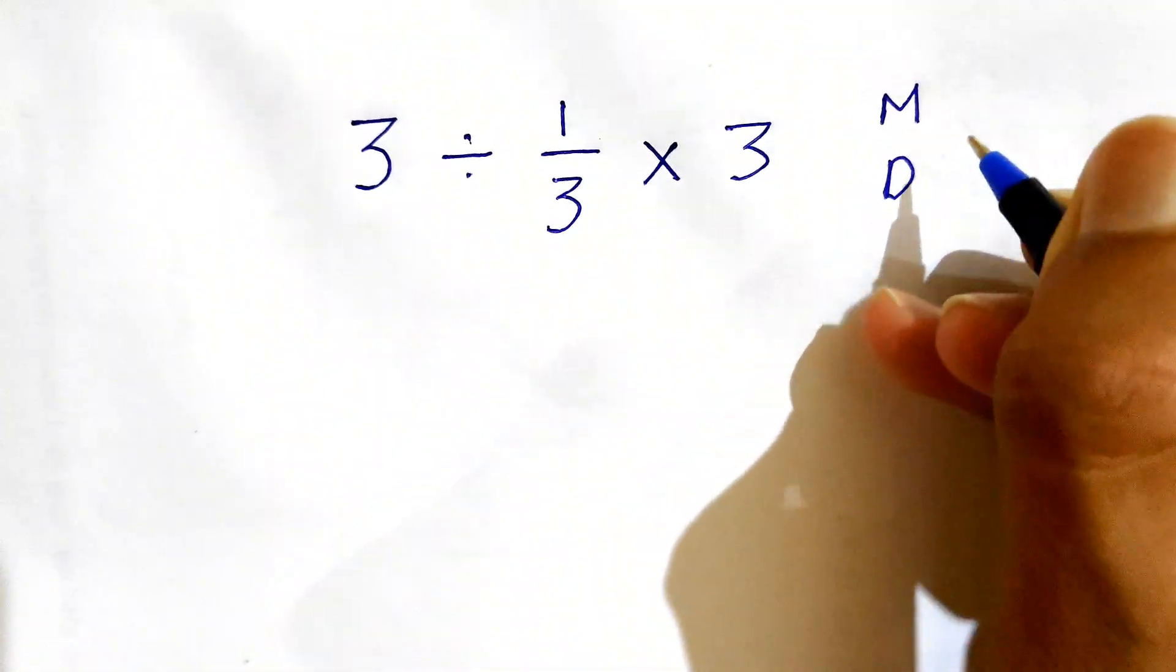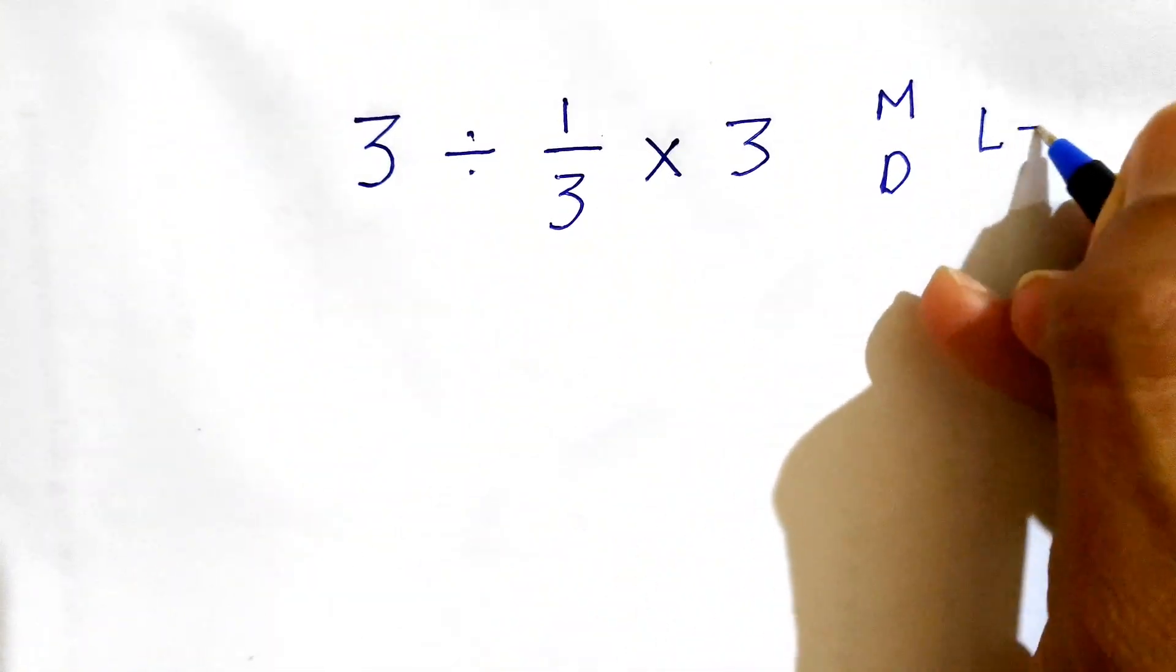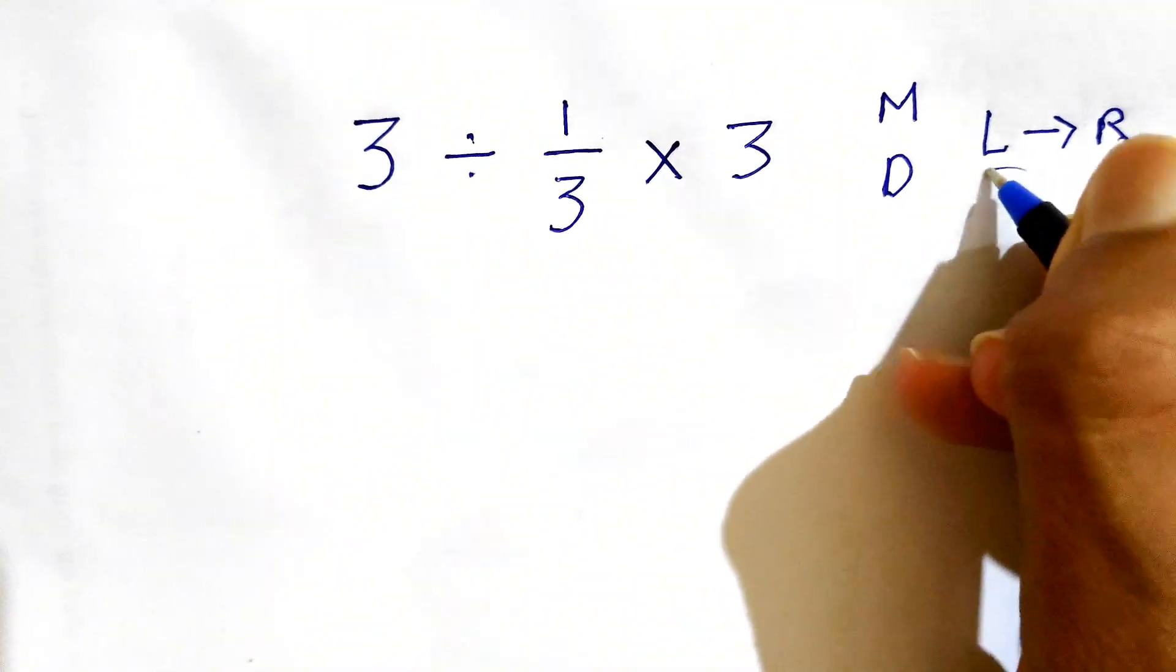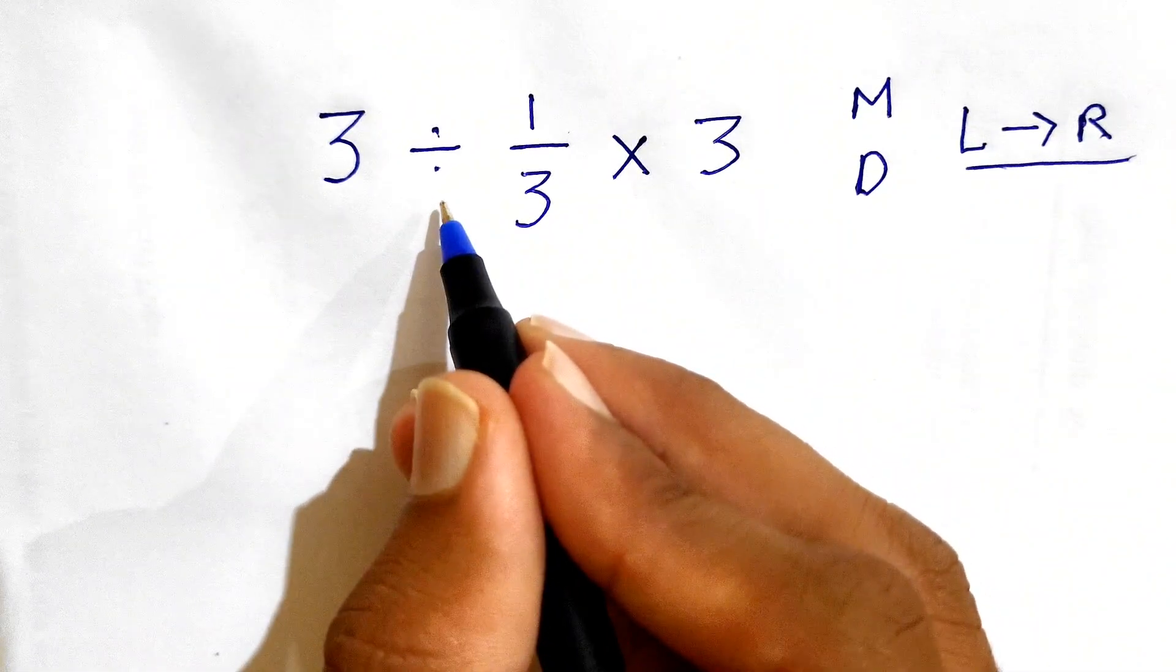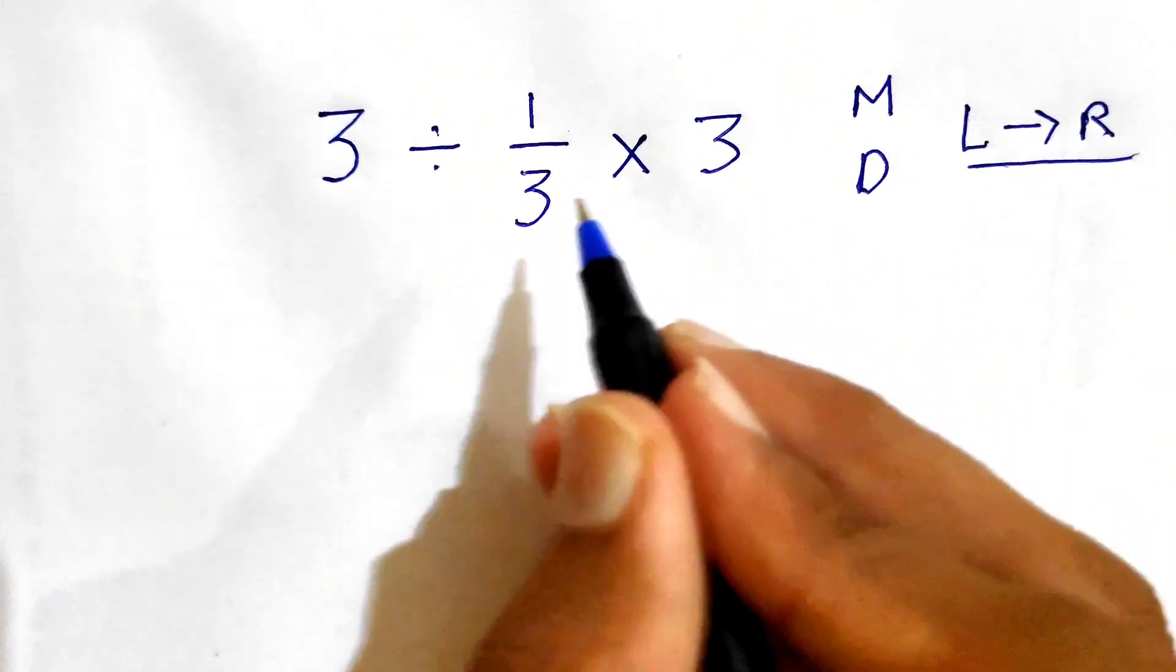But we need to go from left hand side to right hand side. As we can see in this expression, first there is division and then multiplication. So first we need to solve 3 divided by 1 over 3.